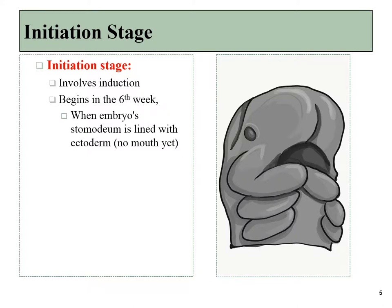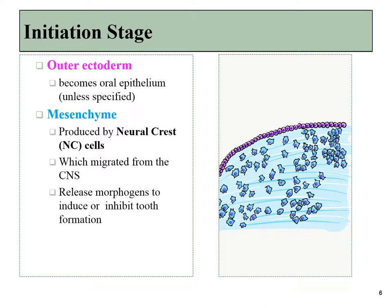The first step in tooth formation is the initiation stage, where we begin to grow a tooth. This is a critical stage determining the spacing of all primary and permanent teeth, occurring during the sixth week of development — before we even have a mouth. There is still just an inward pocket called the stomodium lined by ectoderm, and the jaws haven't finished forming. During this stage, the outer ectoderm becomes oral epithelium unless it is told to become a tooth bud. Deep to the ectoderm is mesenchyme produced by neural crest cells or mesoderm. The neural crest cells have migrated from the central nervous system and release morphogens that tell the body where to form teeth.